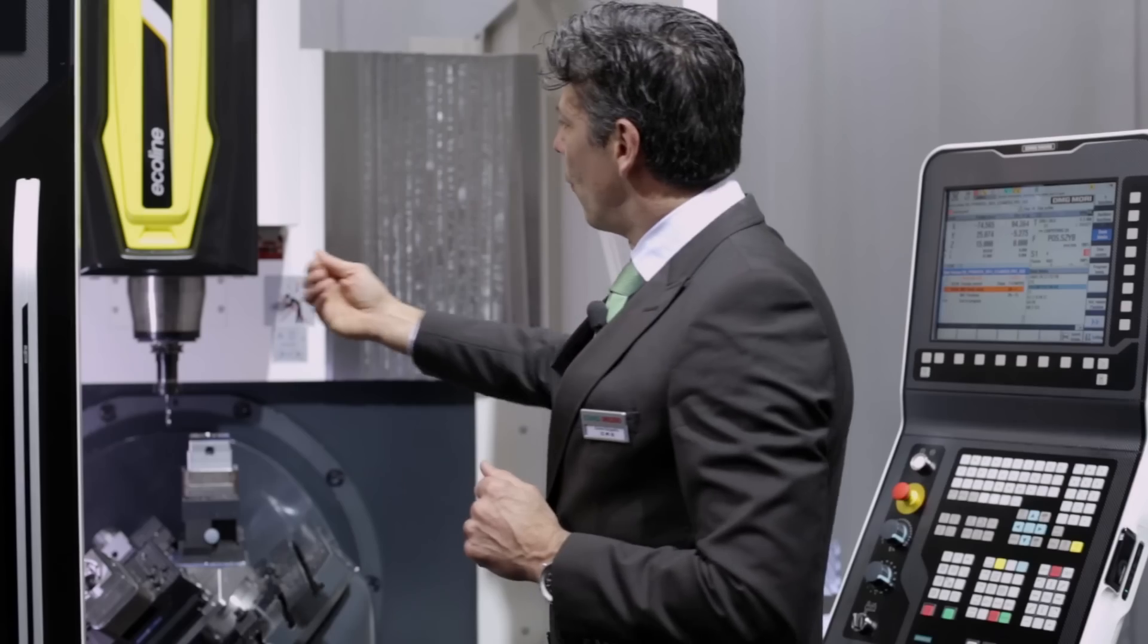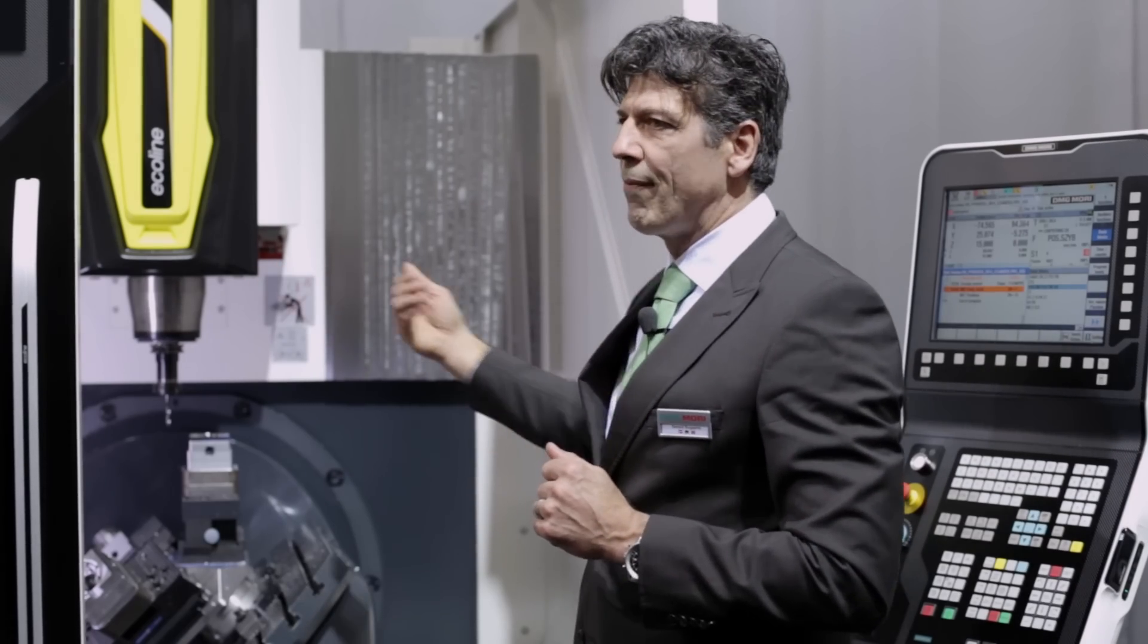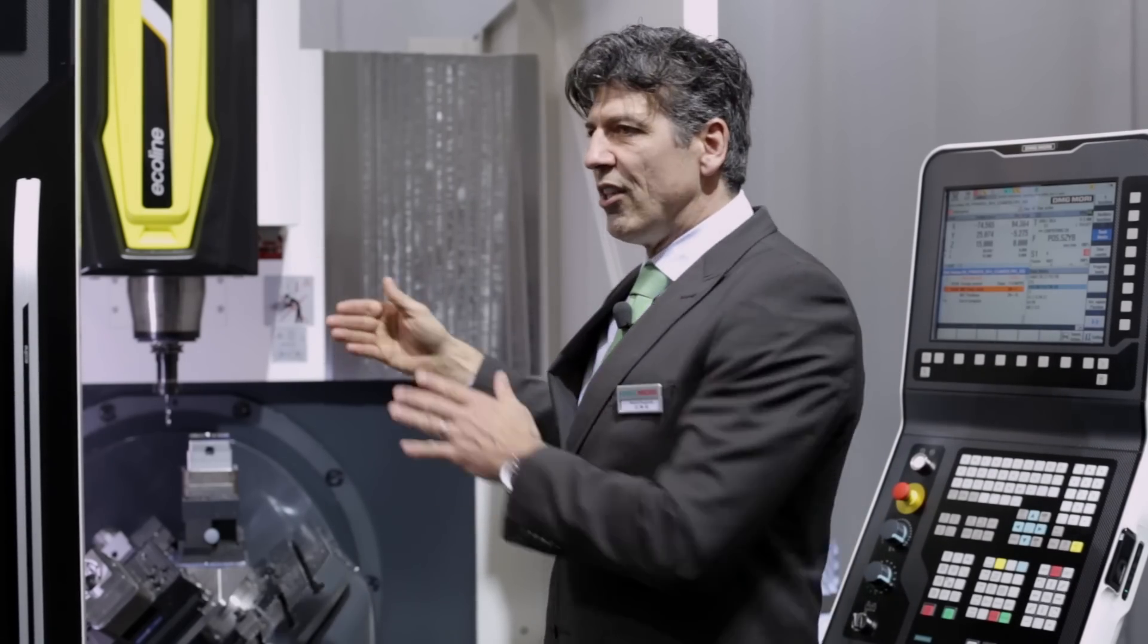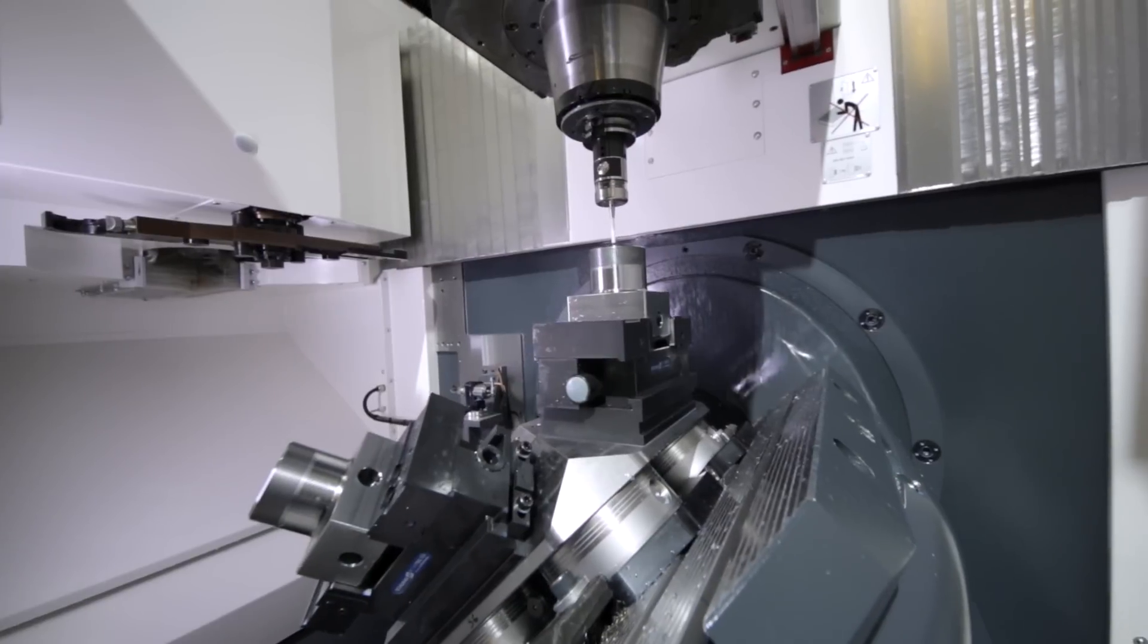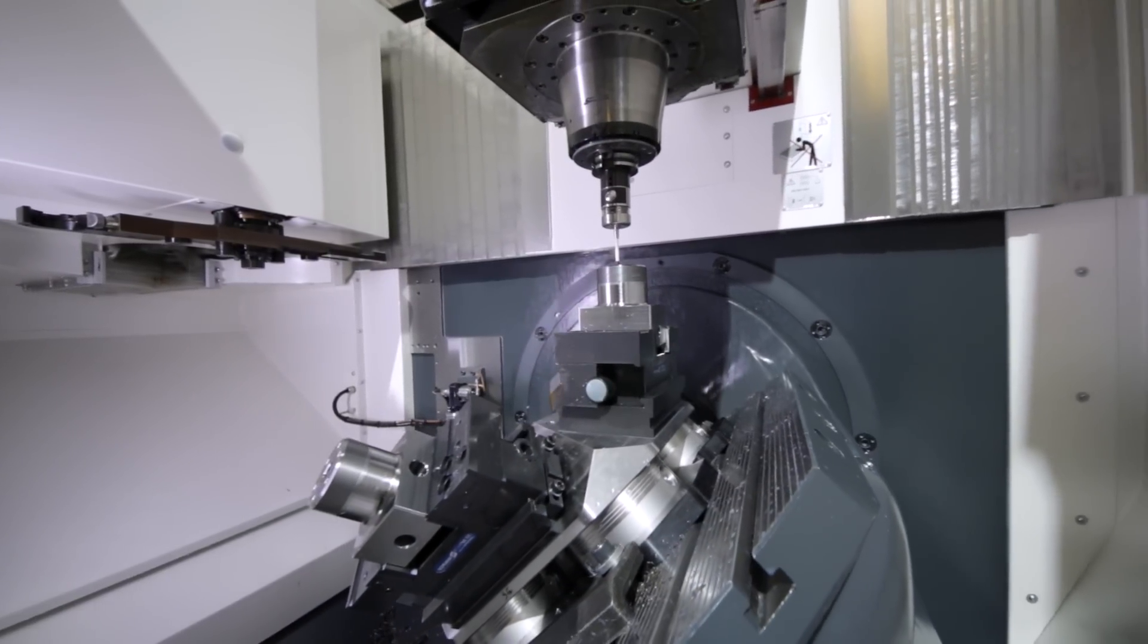The machine has a working envelope of 750 in X, 600 in Y, and 520 in Z, and we can have a table load of 350 kg on this concept, which is amazing.